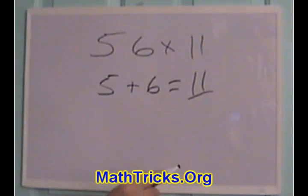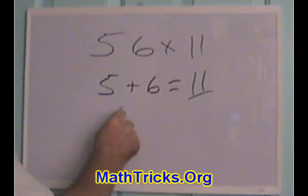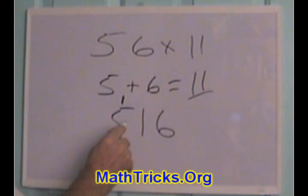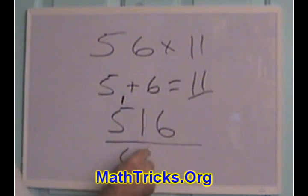And you insert this into the middle of your two-digit number. So, 5. And in this case, you have to carry over one number. So the result is 616. That's your answer.